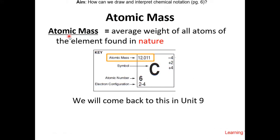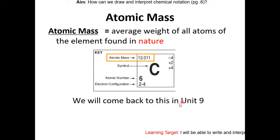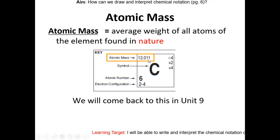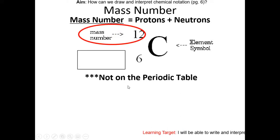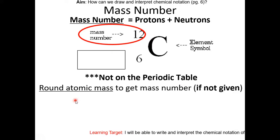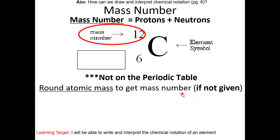Next is atomic mass. Atomic mass is the average weight of all atoms of the element found in nature. We'll come back to atomic mass in unit 9 and explain why this number is a decimal. Mass number is equal to protons plus neutrons. So here the mass number is 12. Notice this number is not on the periodic table. To get the mass number, you round the atomic mass — but only do this if it's not given to you in the question. If it is given to you, do not do this step.